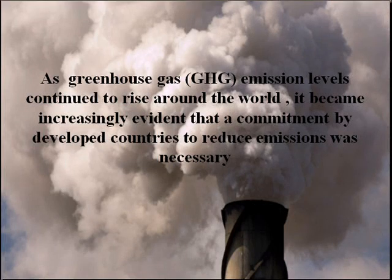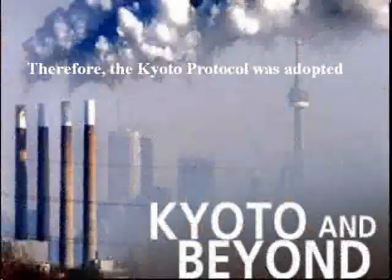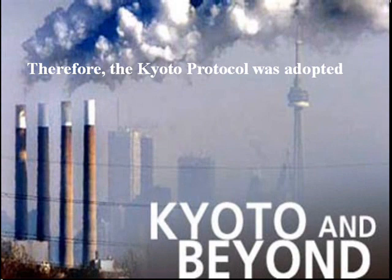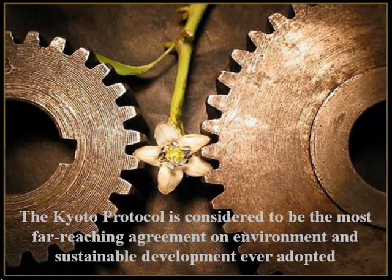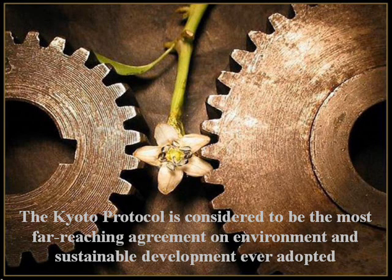As greenhouse gas emission levels continued to rise around the world, it became increasingly evident that only a firm and binding commitment by developed countries to reduce emissions could send signals strong enough to convince businesses, communities, and individuals to act on climate change. The Kyoto Protocol was adopted in Kyoto, Japan in December 1997. Because it will affect virtually all major sectors of the economy, the Kyoto Protocol is considered to be the most far-reaching agreement on environment and sustainable development ever adopted.